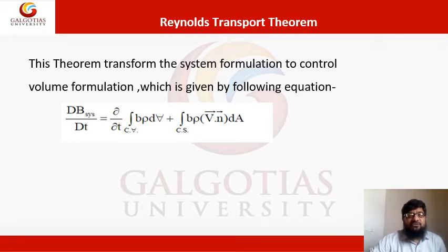This Reynolds transport theorem is given by the formula. If capital V is the property of a system, then the material derivative of that property of the system can be given as the rate of change of that property over the control volume and the rate of flux, total flux across that control volume surfaces.